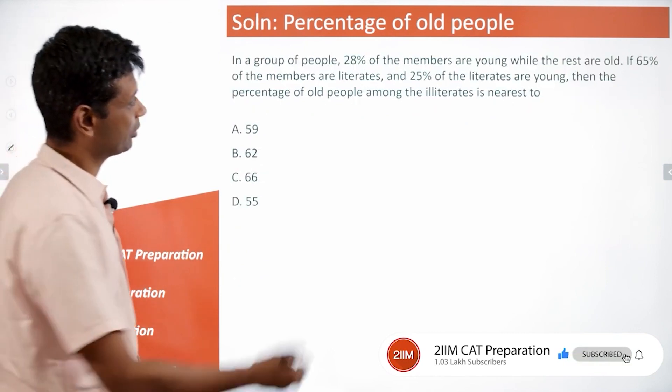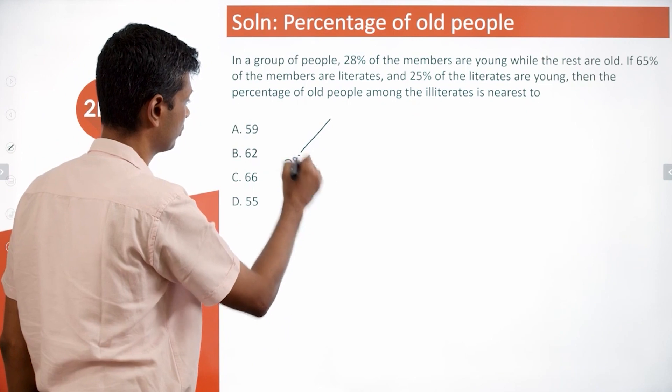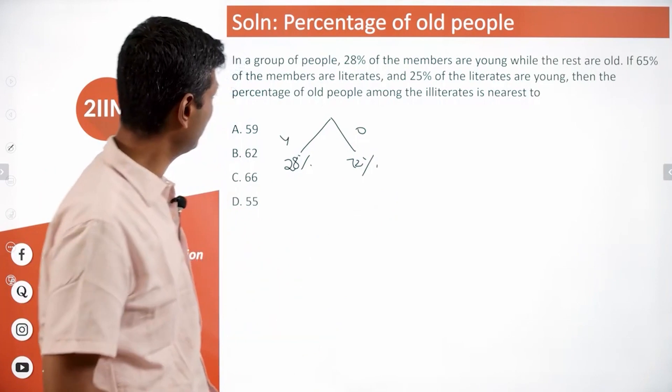This should be simple. 28 percent are young, the rest are old, so 28 percent young, 72 percent old. This is the standard template.